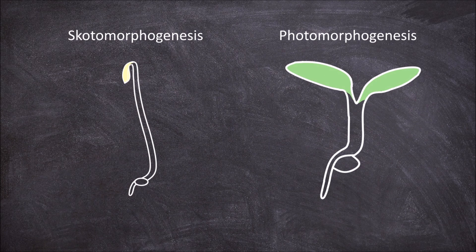Scotomorphogenesis is when a seedling develops in the dark. Seedlings that have undergone growth in the dark are described as being an etiolated seedling.